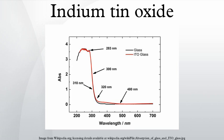ITO is often used to make transparent conductive coatings for displays such as liquid crystal displays, flat panel displays, plasma displays, touch panels, and electronic ink applications. Thin films of ITO are also used in organic light-emitting diodes, solar cells, antistatic coatings, and EMI shielding.